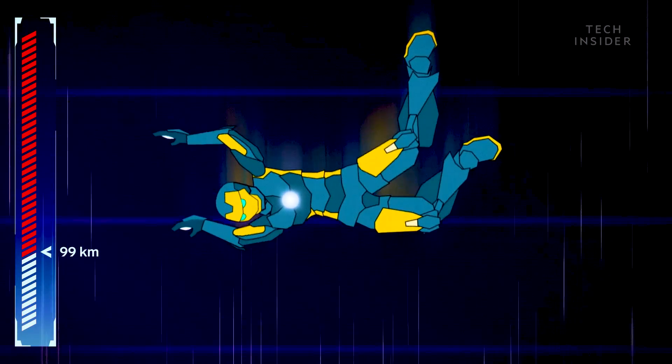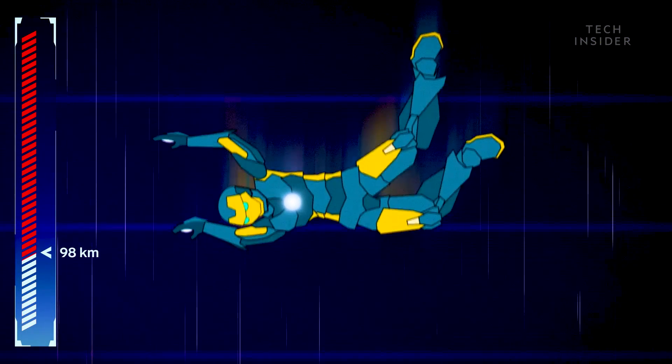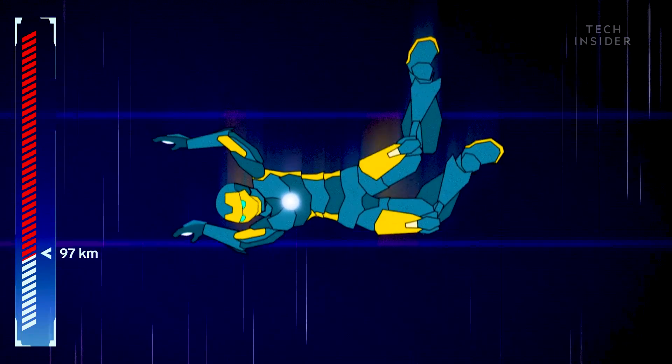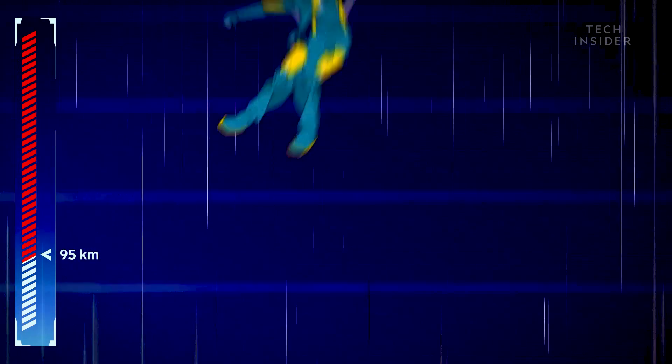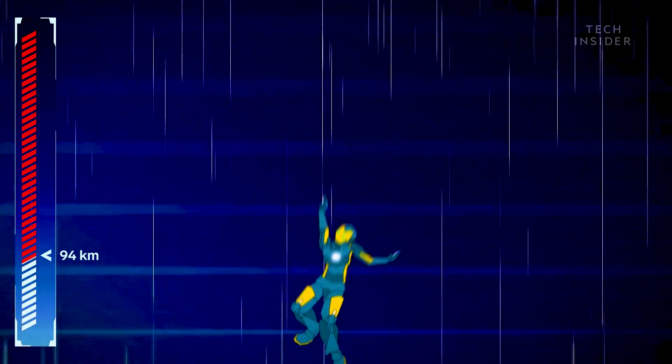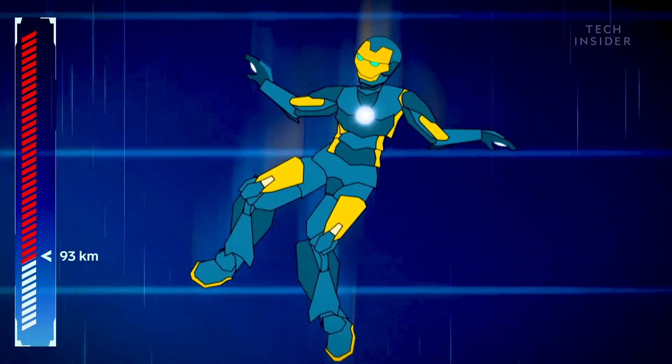As you reenter, you have one goal: slow down. You're traveling at hypersonic speeds. So if you deployed a parachute now, it'll shred to pieces. And that's not the only problem.